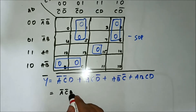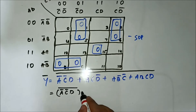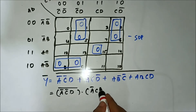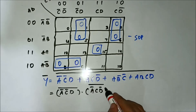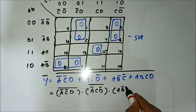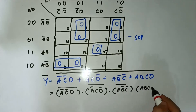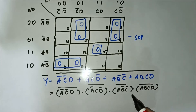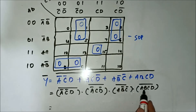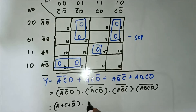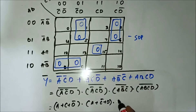Applying De Morgan's theorem to the whole expression gives us: A-bar, C, D-bar; A, B-bar, C-bar; and A, B, C, D — whole complement. Then applying De Morgan's theorem to the individual terms gives: A or C or D-bar; A or C-bar or D; and A-bar or B or C.